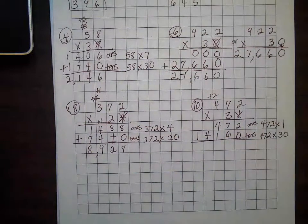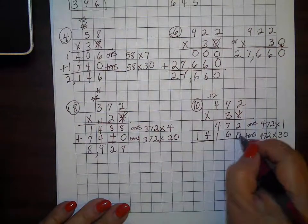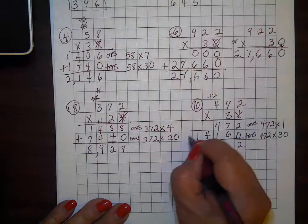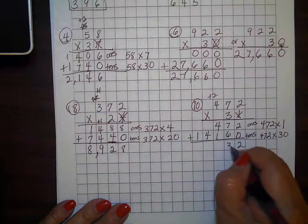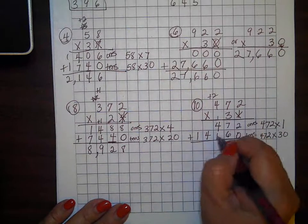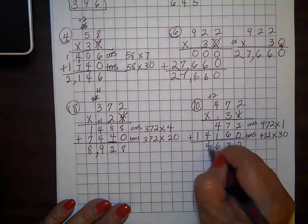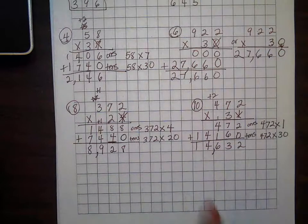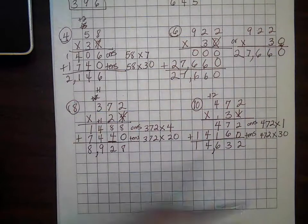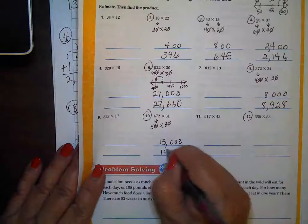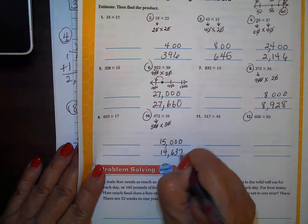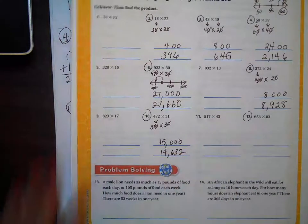We said it was going to be around 15,000 — let's check: 2 plus 0 equals 2; 6 plus 7 equals 13, regroup; then 4, 5, 6, 4, and 1 — so it's 14,632, and this is within reason of our 15,000 estimate.